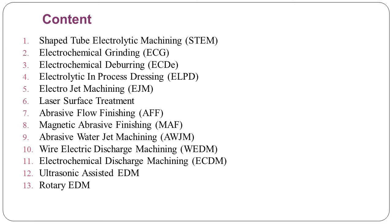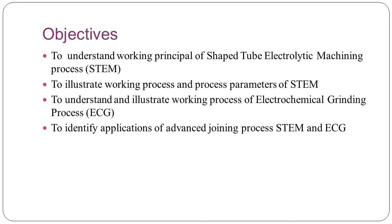It is also known as the hybrid non-conventional machining process. In this lecture, we are going to see the first two main processes: Shape Tube Electrolytic Machining and Electrochemical Grinding. The objectives of this lecture are to understand the working principle of STEM, to illustrate its working process and process parameters, to understand and illustrate the working process of ECG, and to identify applications of both STEM and ECG processes.